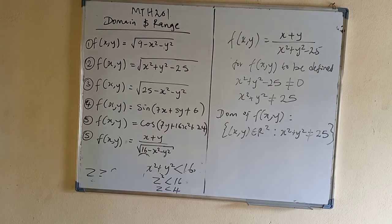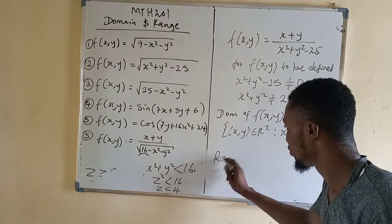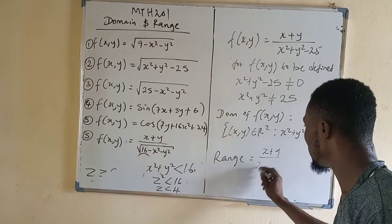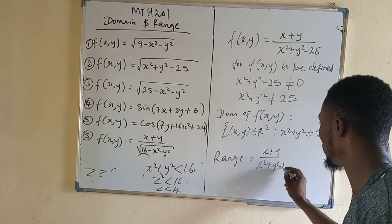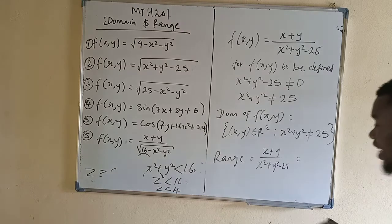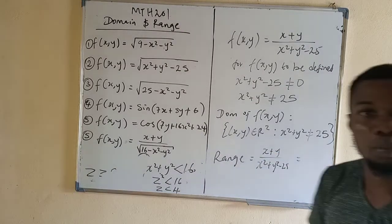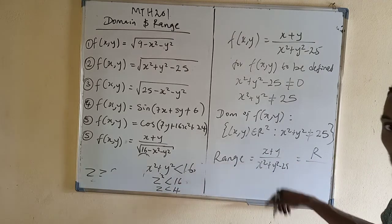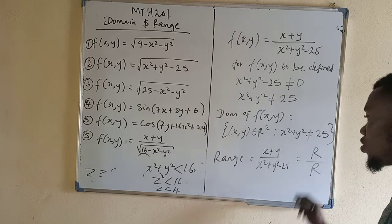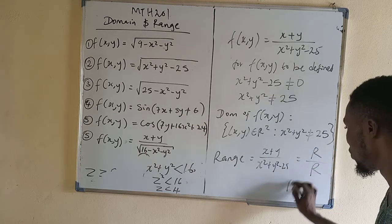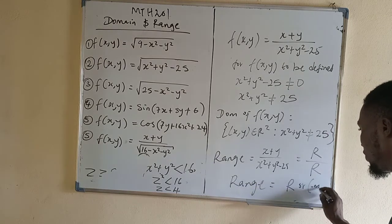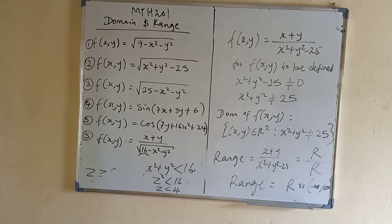You can now find the range. The range of (x plus y) over (x squared plus y squared minus 25): the numerator is an entire function with range all real numbers; the denominator is also a polynomial with range all real numbers (excluding zero, but that only eliminates undefined points). So the range is all real numbers, from negative infinity to positive infinity.